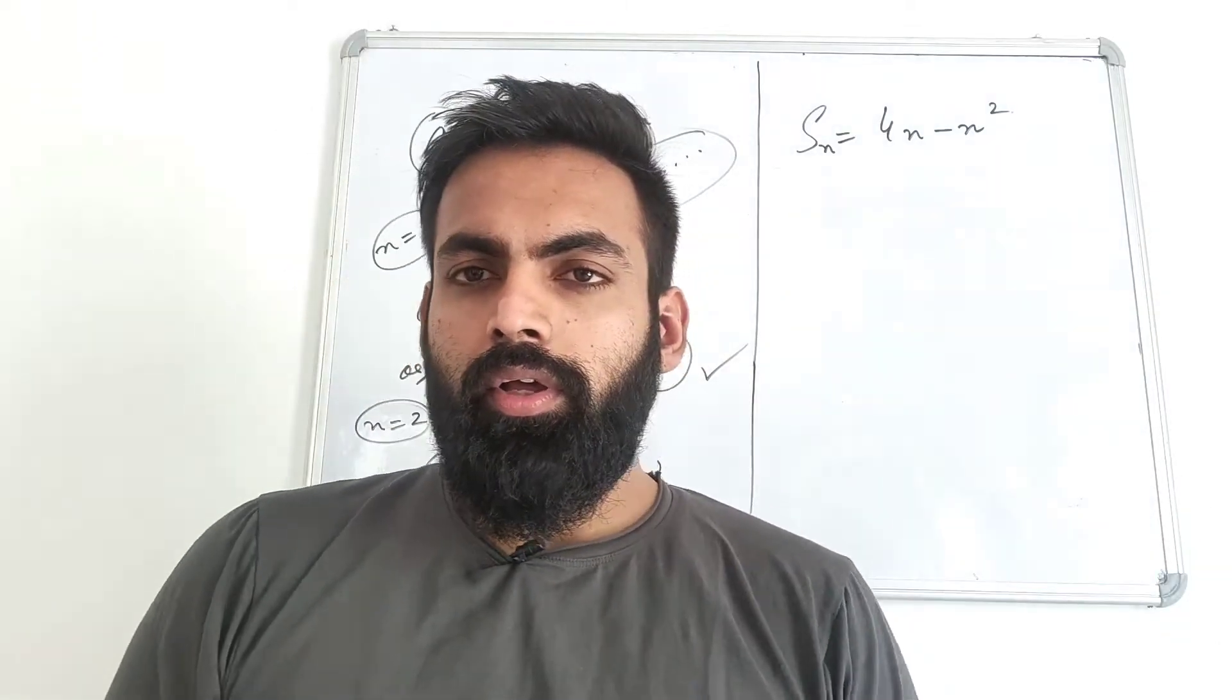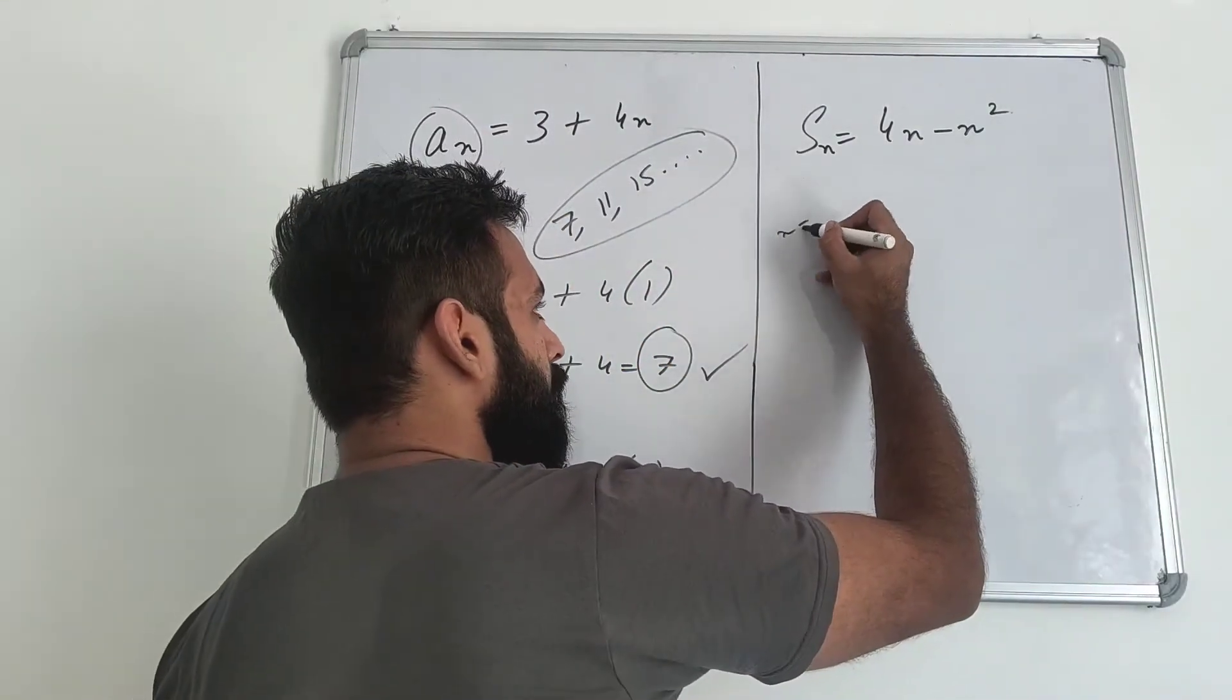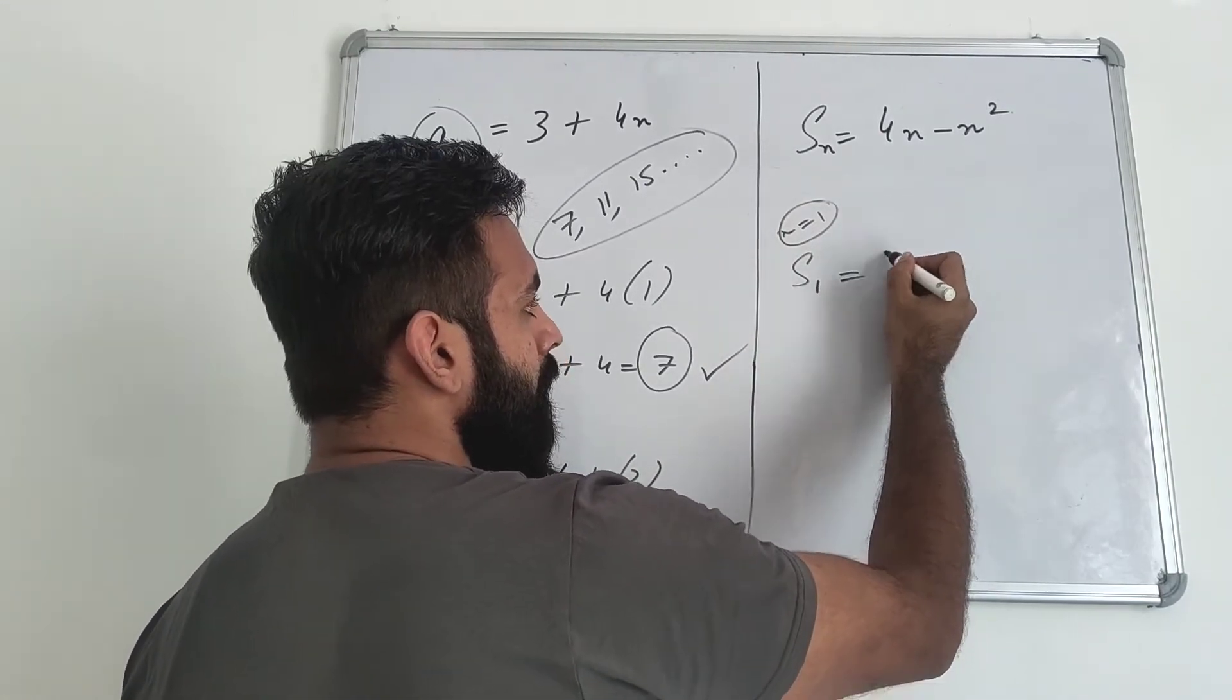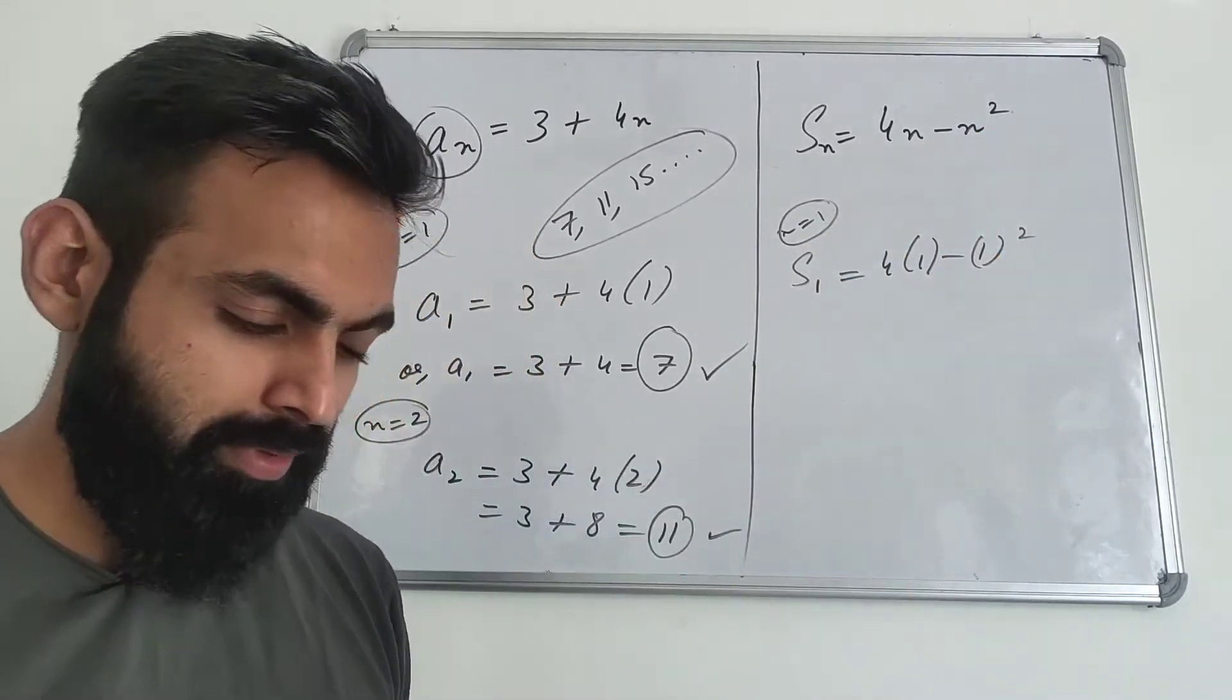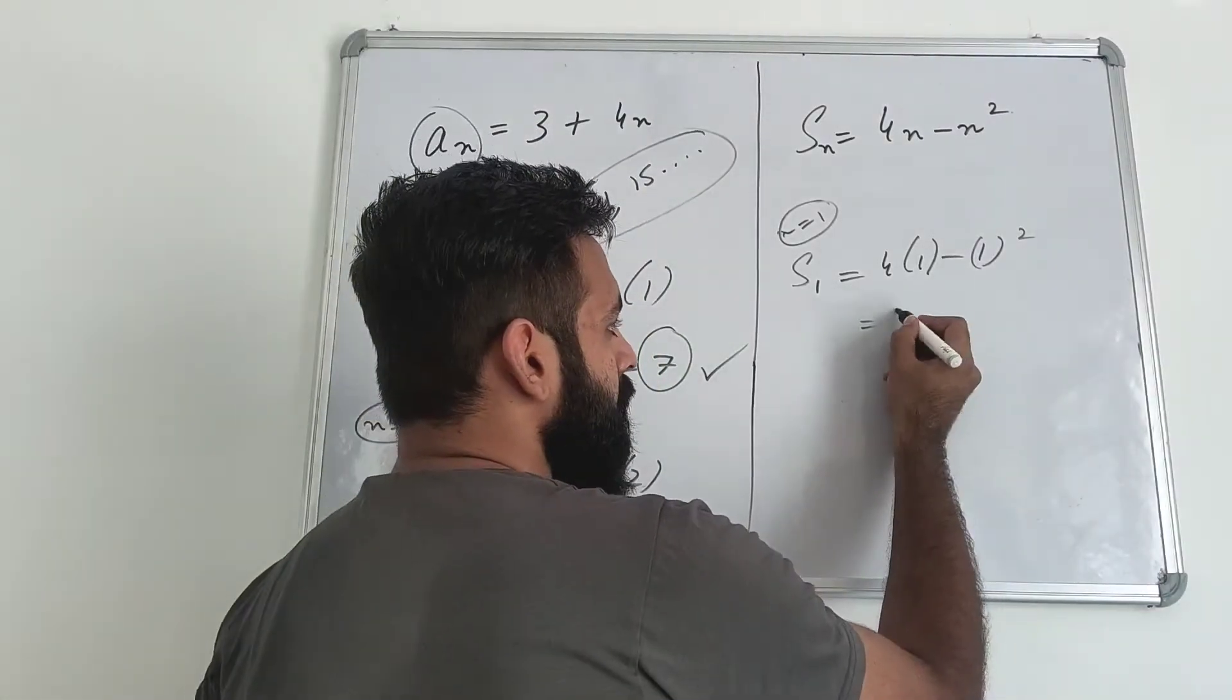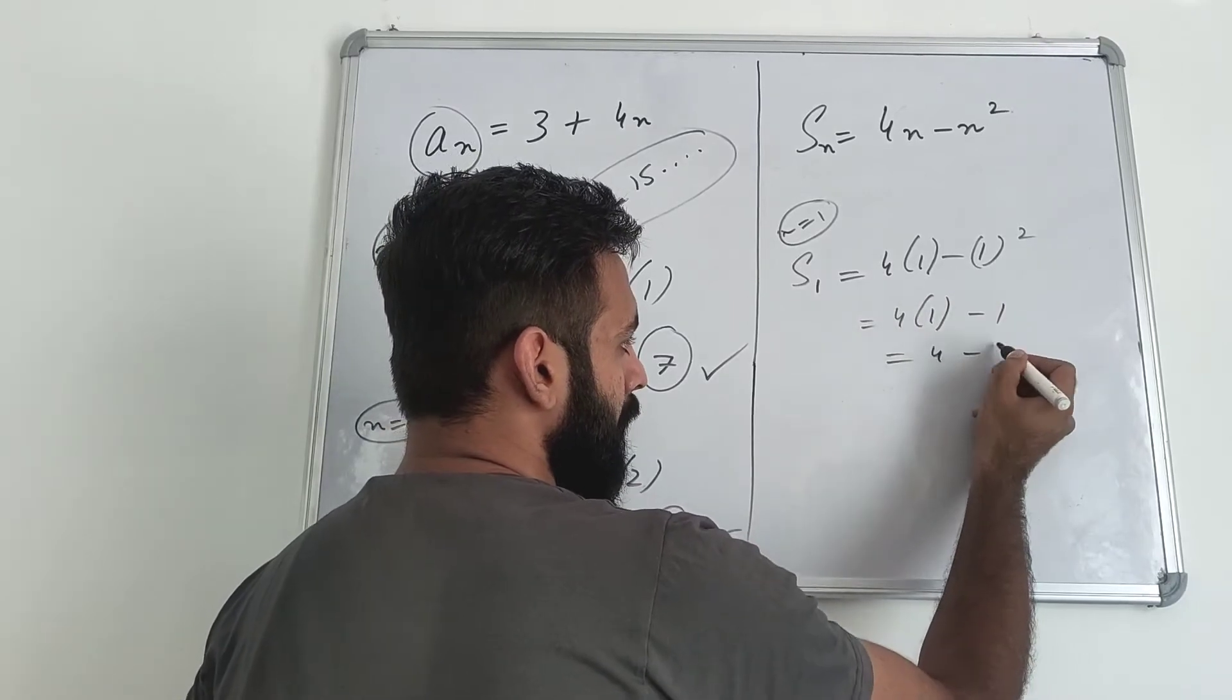Now, coming over to SN. Look, here I will also put n equals 1. Let's say n value I put 1. So you will get S1 equals 4 into 1 minus 1 squared. That is 4 into 1 minus 1, which is 4 minus 1, equals 3.